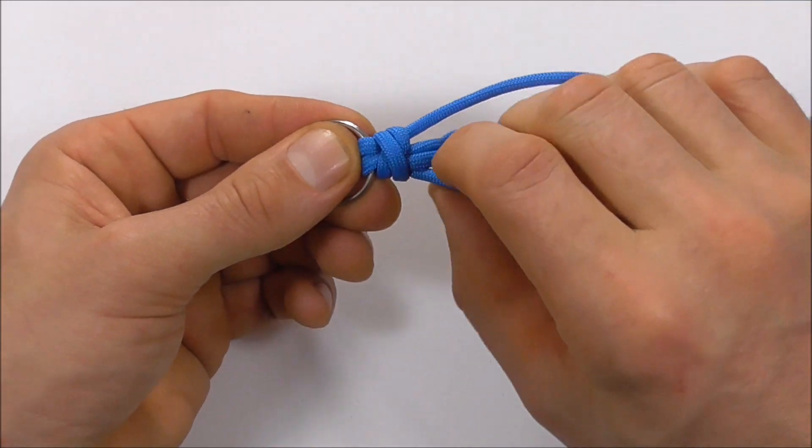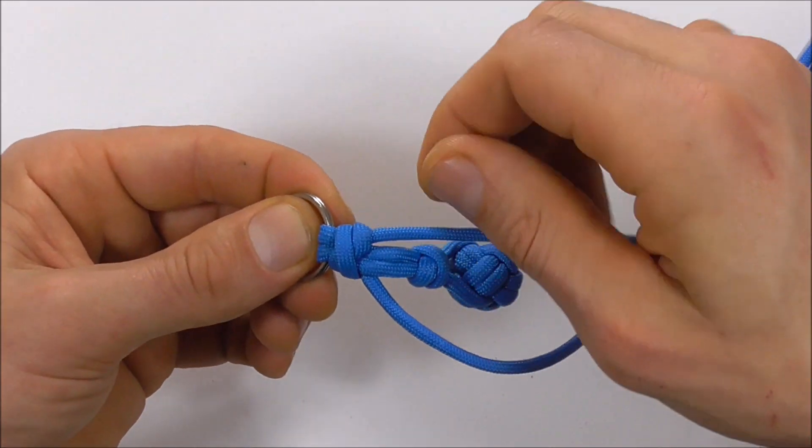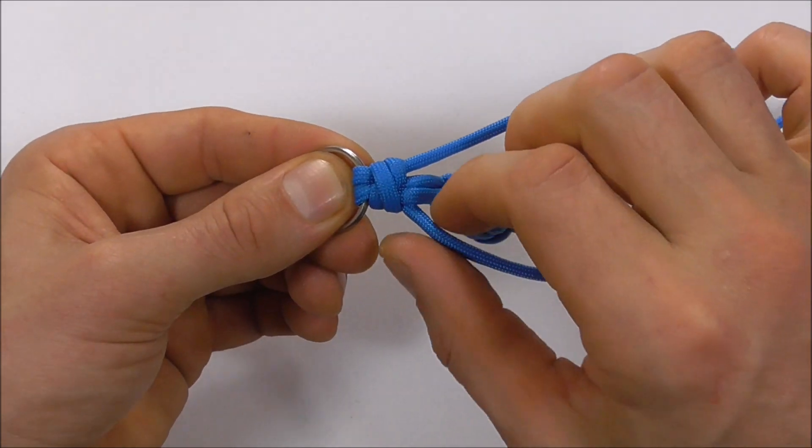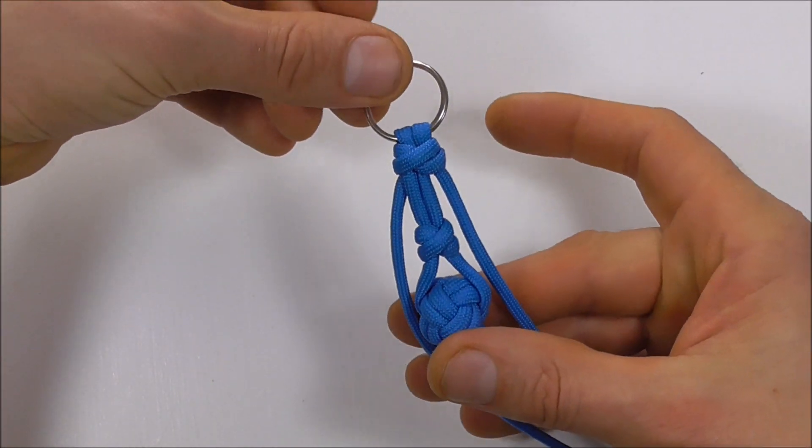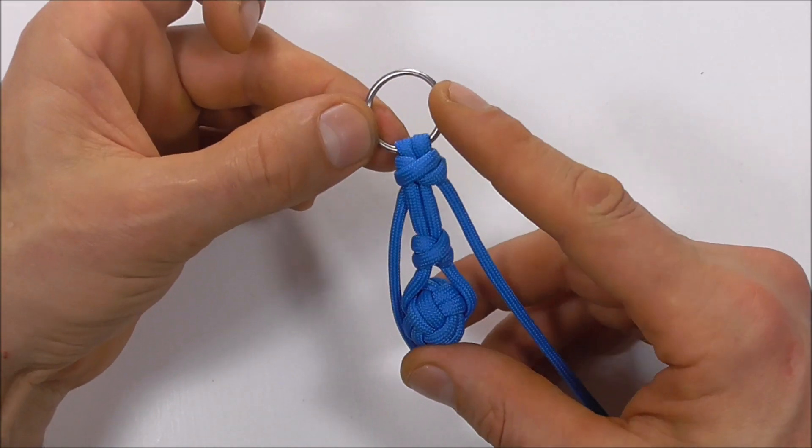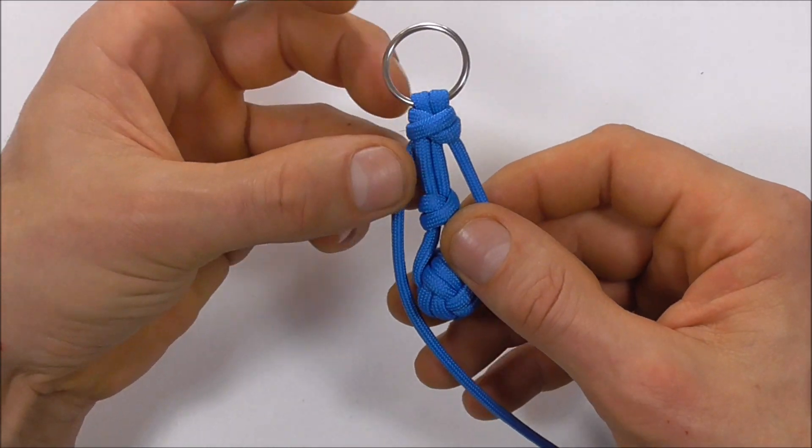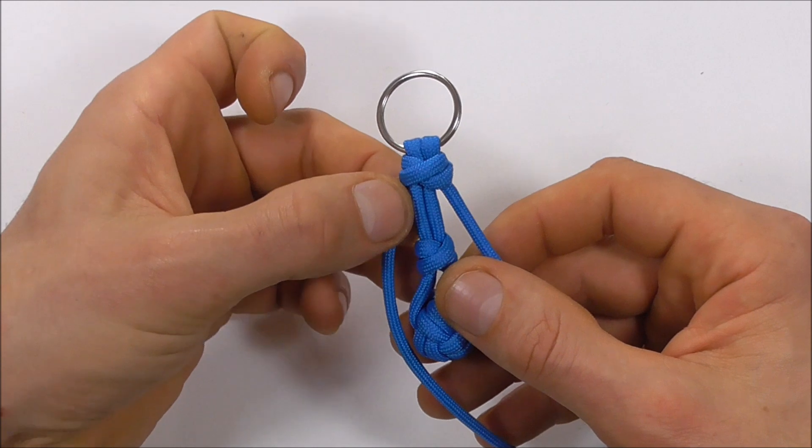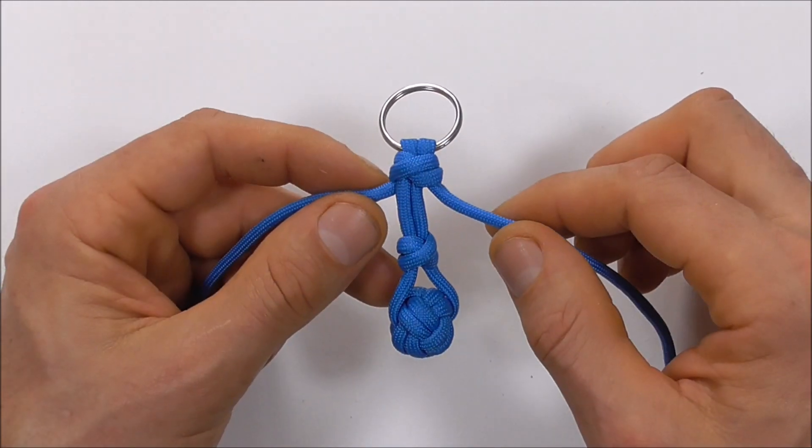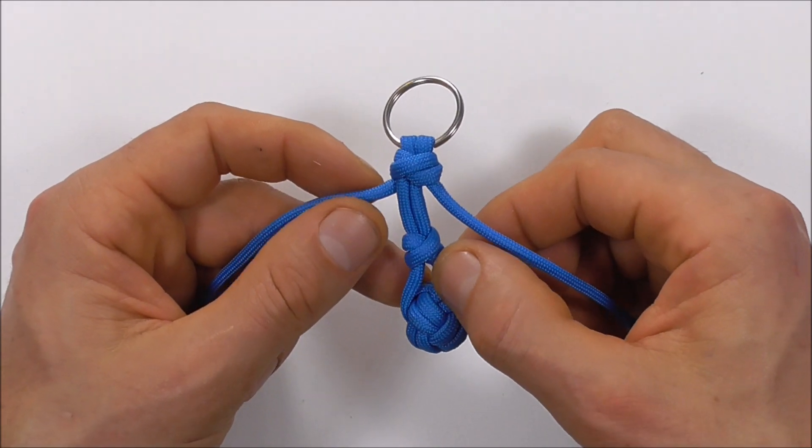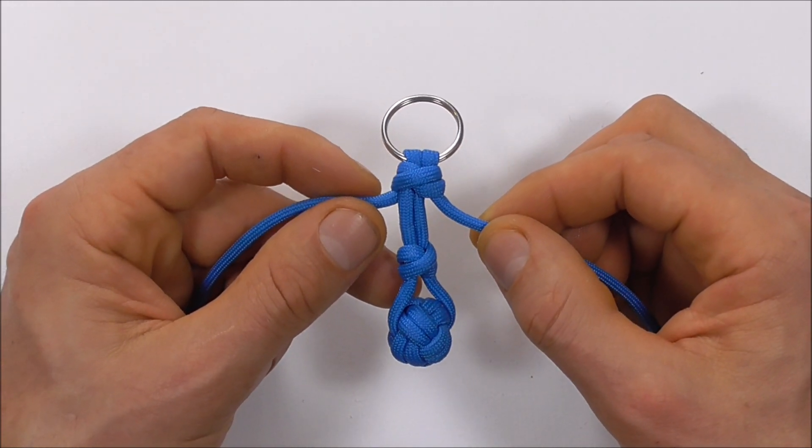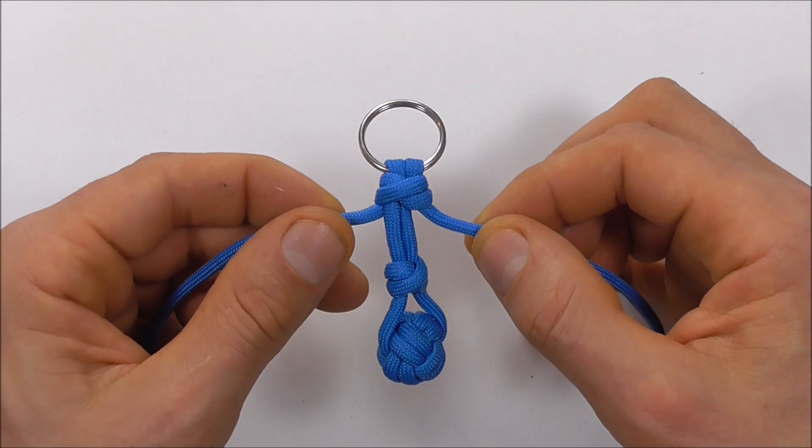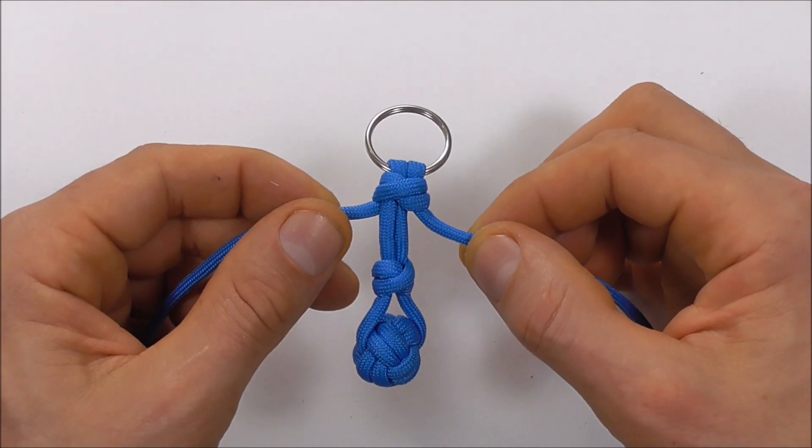You can cut off these excess pieces, and you should have connected to your split ring using the double connection knot. That's it! If you have any comments, suggestions, or requests, leave them in the comments below. Thanks for watching, I like you all, and I'll see you on the next video.